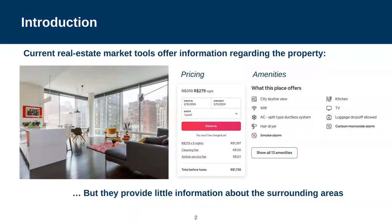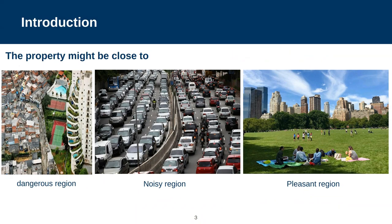Most real estate market tools provide real information regarding properties. For instance, you can see several property photos, consult the real rent pricing, and check some of the amenities available, as shown in this example. However, you hardly ever have any information about surrounding areas — you have no information about the neighborhood. Thus, you don't know if the property is close to some dangerous, noisy, or pleasant regions, which certainly would affect your choice of the right place to rent or buy.